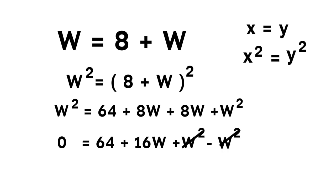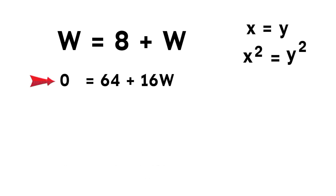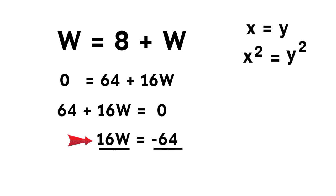So now we have 64 plus 16W equals 0. Time to solve. 16W equals negative 64. Divide both sides by 16, and we get W equals negative 4.